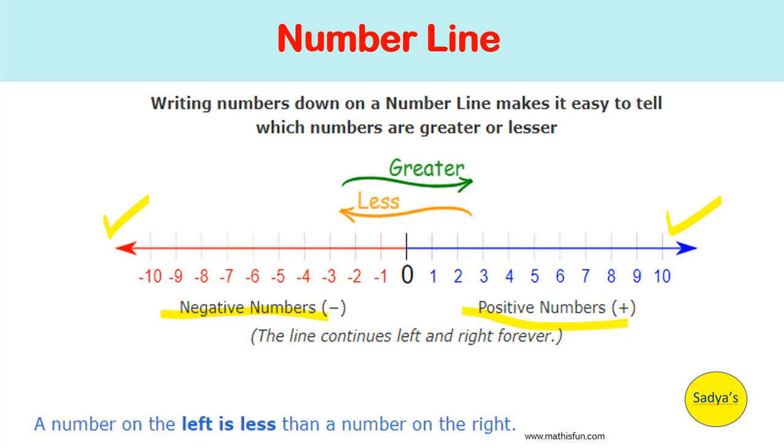On a number line, the number increases from left to right. For example, 6 is greater than 2. As we move from left to right, 2 is smaller number and 6 is greater number.